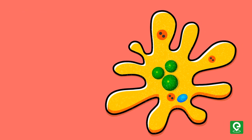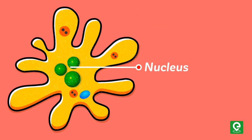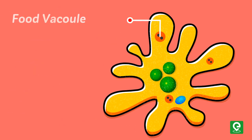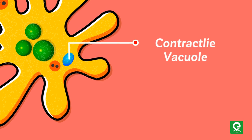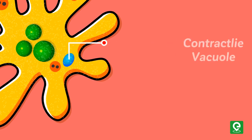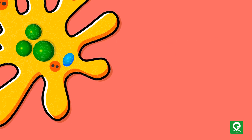The cell of an amoeba consists of a cell membrane, a nucleus with genetic material, a food vacuole for digestion of food, and a contractile vacuole for osmoregulation.